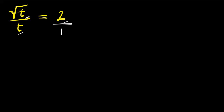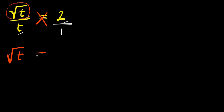The first method will be to cross multiply. The square root of t will multiply one, so we have square root of t, and t will multiply two, so we have 2t.